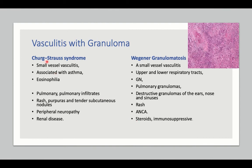Churg-Strauss syndrome is a variant of Wegener's — a small vessel vasculitis usually associated with an eosinophilic condition like asthma and eosinophilia on full blood count, plus pulmonary infiltrates, rashes, and renal disease. Diagnosis is based on the association with asthma and eosinophilia and the characteristic histological finding of granuloma with eosinophilic infiltration.